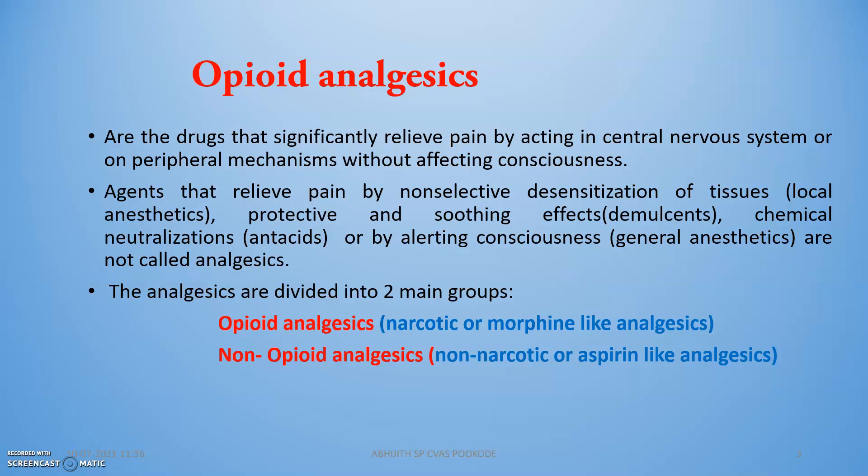The analgesic class is mainly divided into two main groups. First is opioid analgesics — these are narcotic or morphine-like analgesics having a structure resembling morphine. The second main group is non-opioid analgesics, which have no opioid properties. These are also called non-narcotic or aspirin-like analgesics.